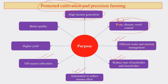I will talk about this in greater detail in the following slides. Higher yield is of course always the target for any intervention you try to take in the field of agriculture — the fundamental target is to increase the yield. Better quality, of course, cannot be compromised. So these are the overall purposes of precision farming and also protected cultivation.